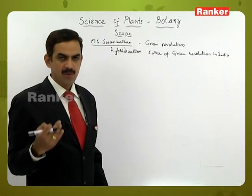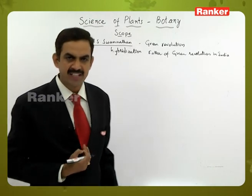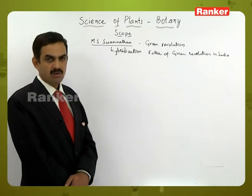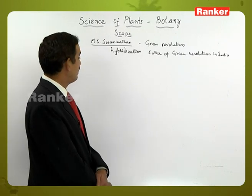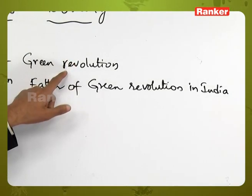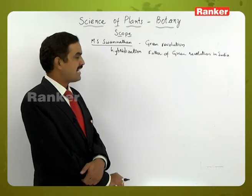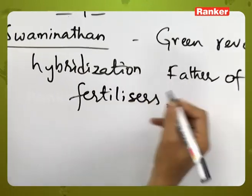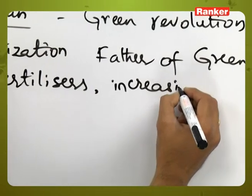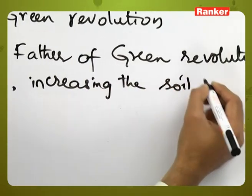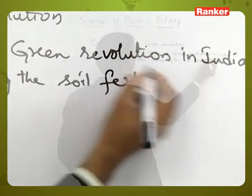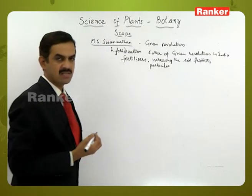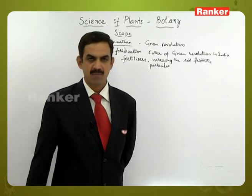Domesticated crop production was decreasing, and there was a need to increase it — which was achieved by the Green Revolution. The basic factors that made the Green Revolution possible included the use of fertilizers to increase soil fertility, pesticides, and high-yielding varieties.